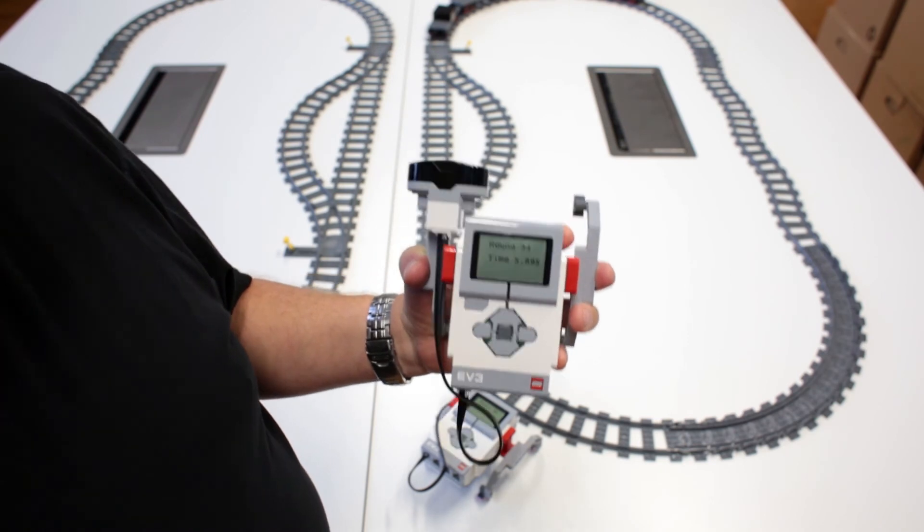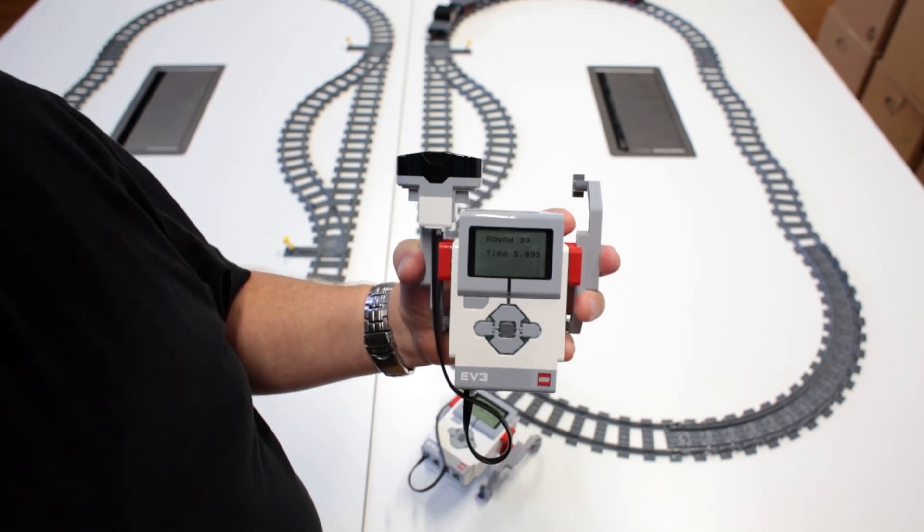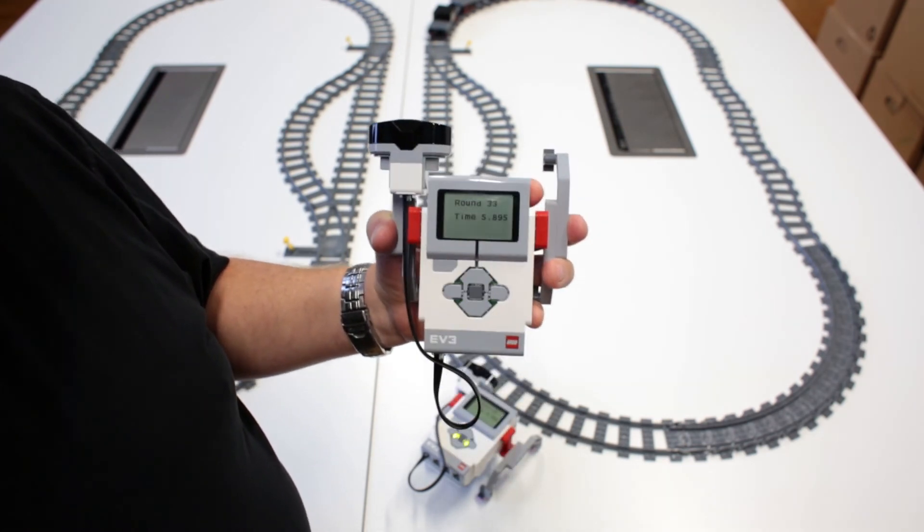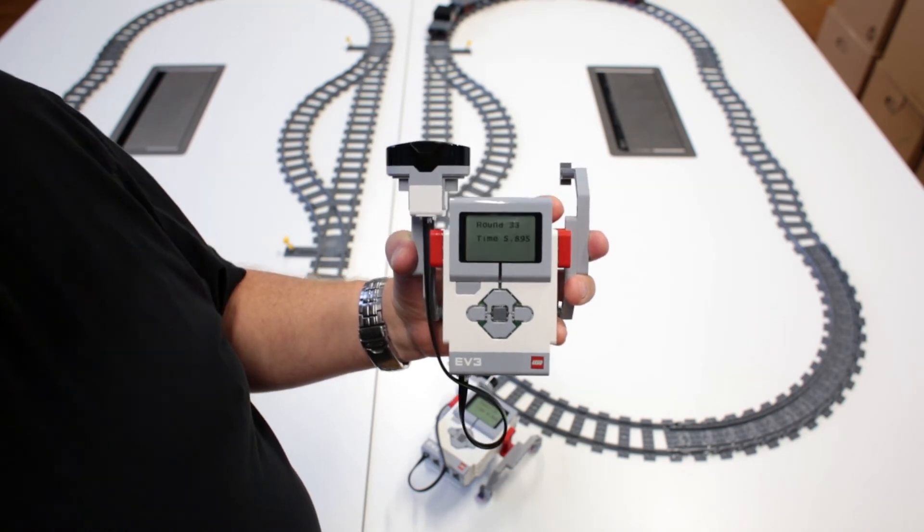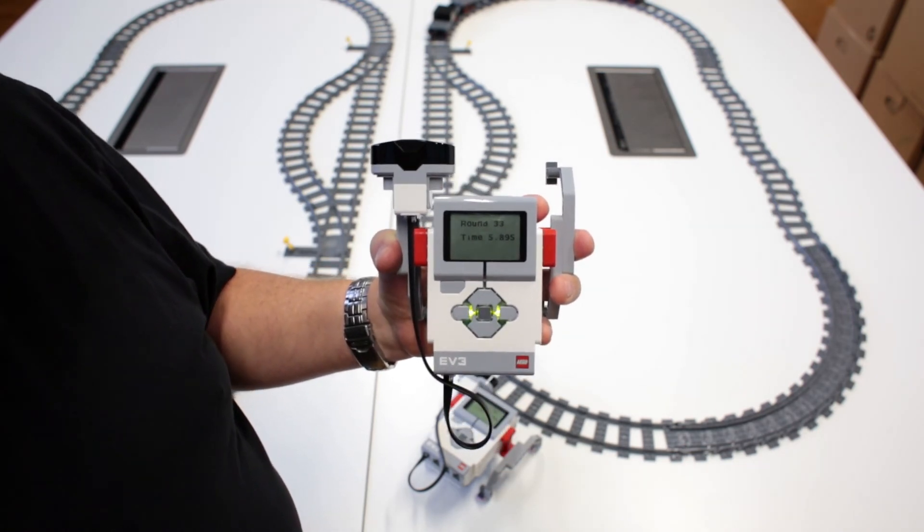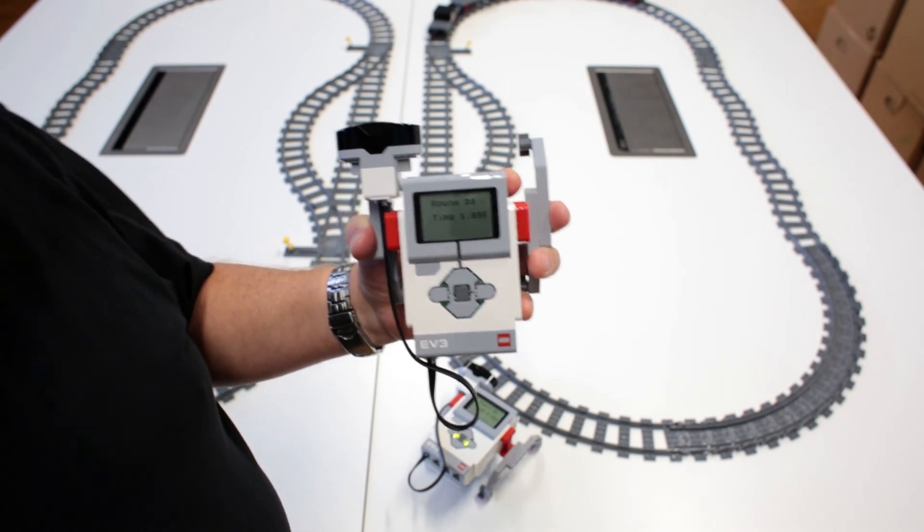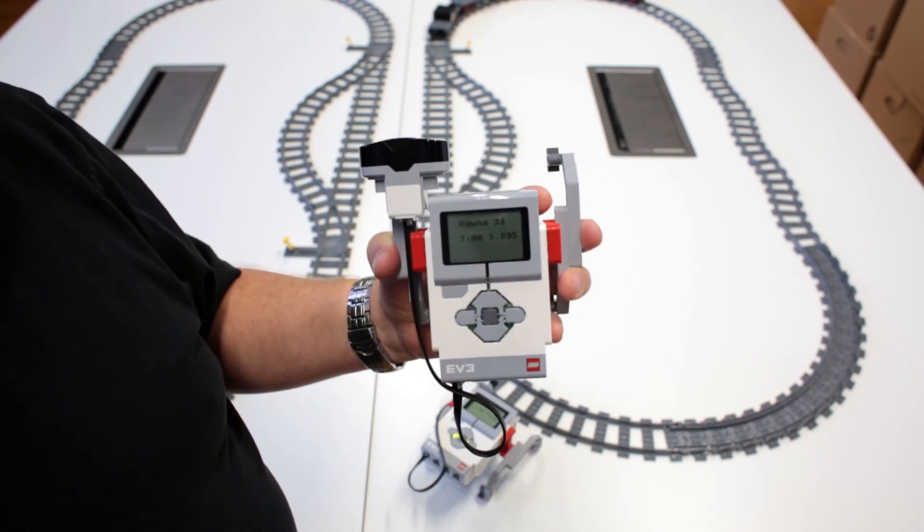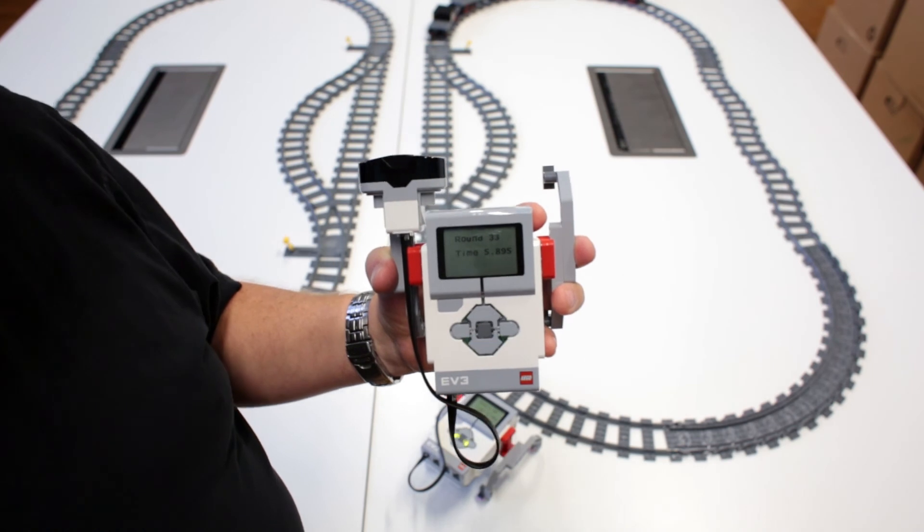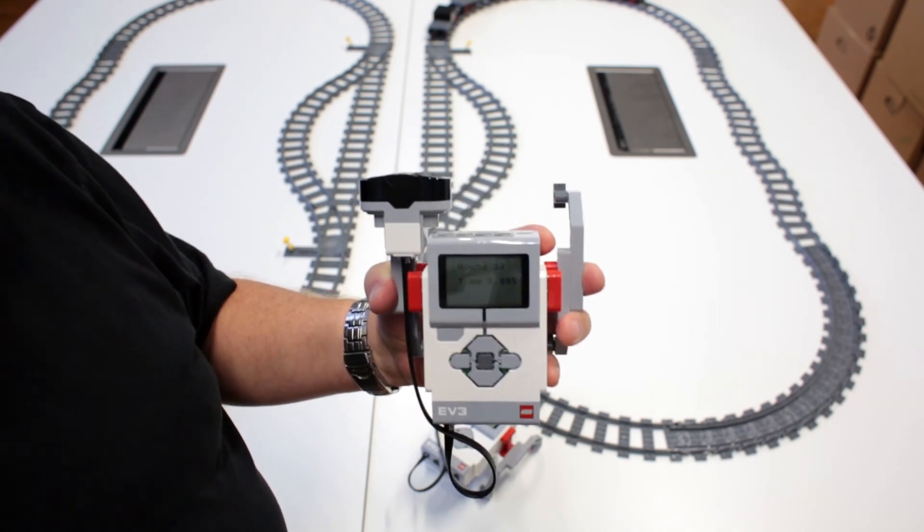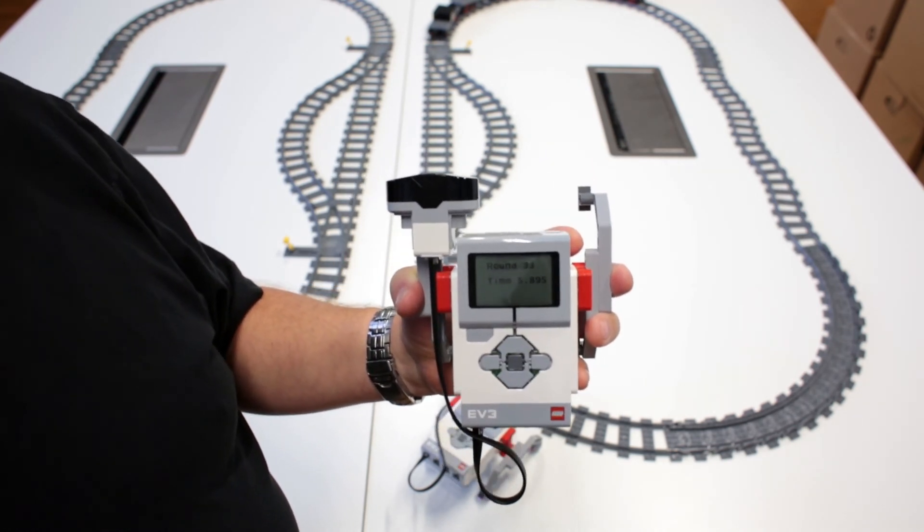What you saw on the test, it was that we were using our EV3 for measuring the number of rounds and the lap time. And we often use that setup for doing tests where we need to find out the speed and the battery consumption. And as you can see, the new system was a little faster than the old one.